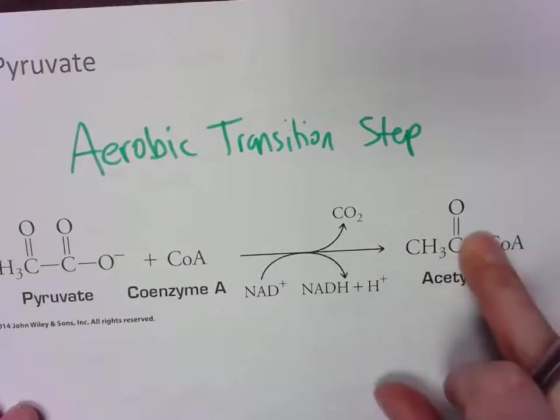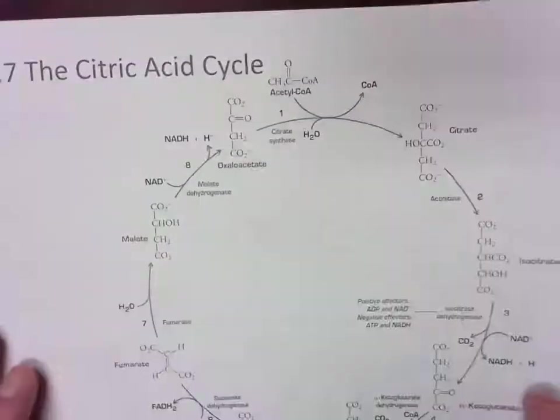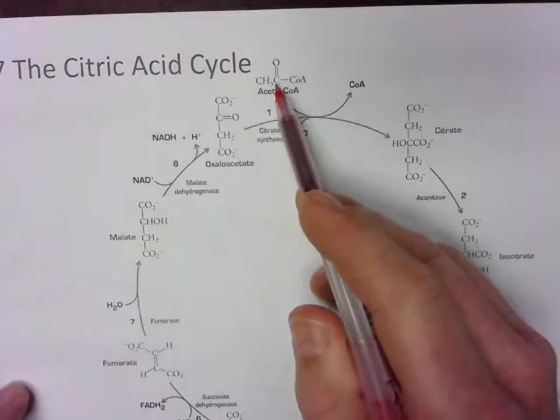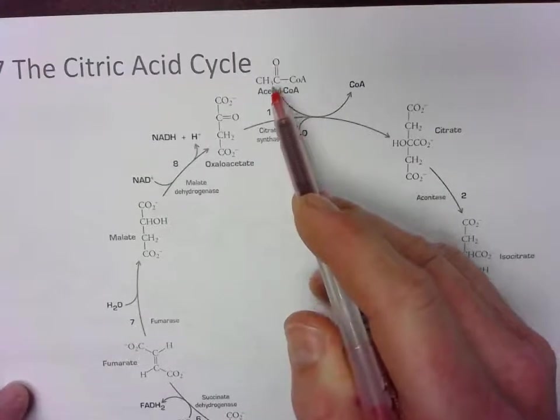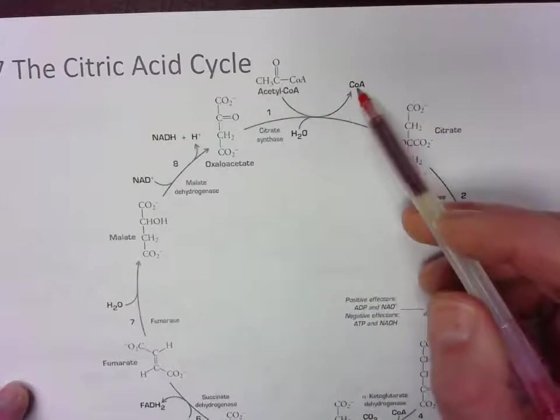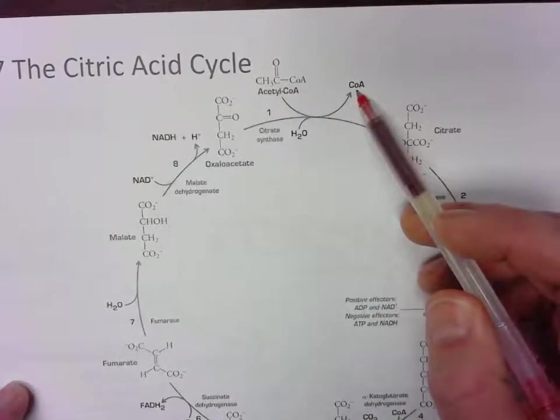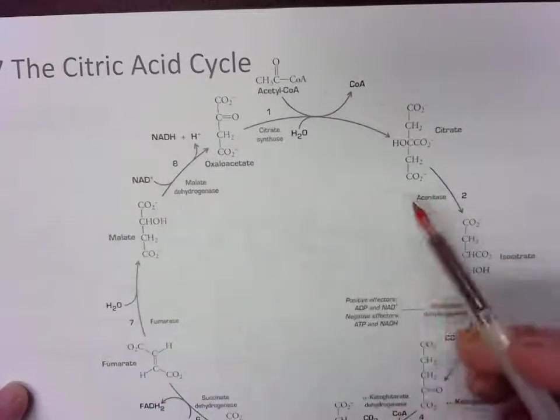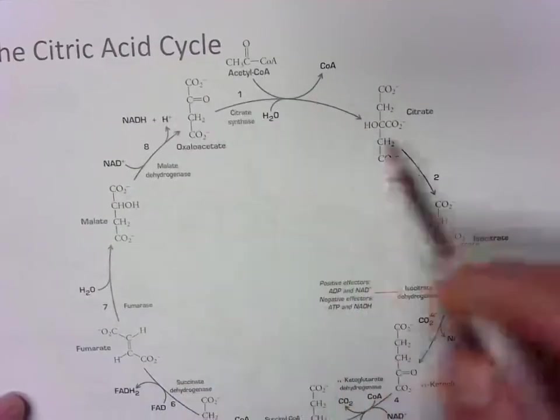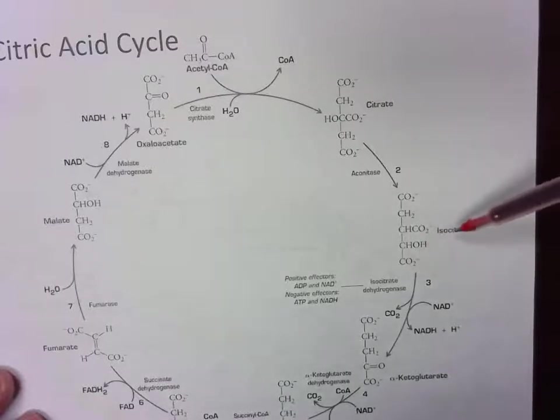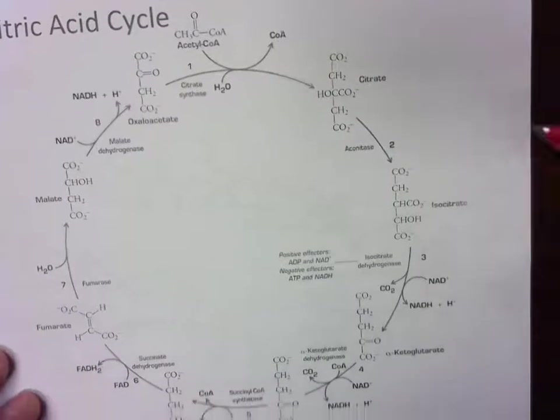Now these acetyl-CoAs will then funnel into the citric acid cycle. Got a lot going on with the citric acid cycle. Start up here. This is where acetyl-CoA comes in, combines with oxaloacetate. So these two are reactants along with water. CoA would be a product. Citrate would also be a product. Nothing happens in terms of energy production here. So citrate is produced in the first step. Same thing with the second step. Nothing happens with the energy. Isocitrate is produced in step three, however.